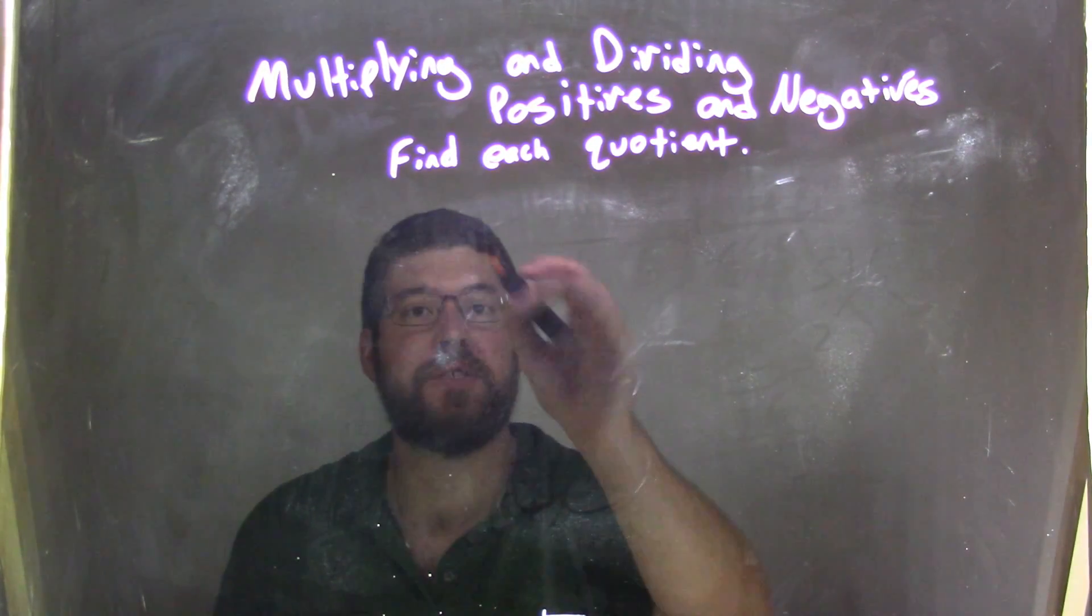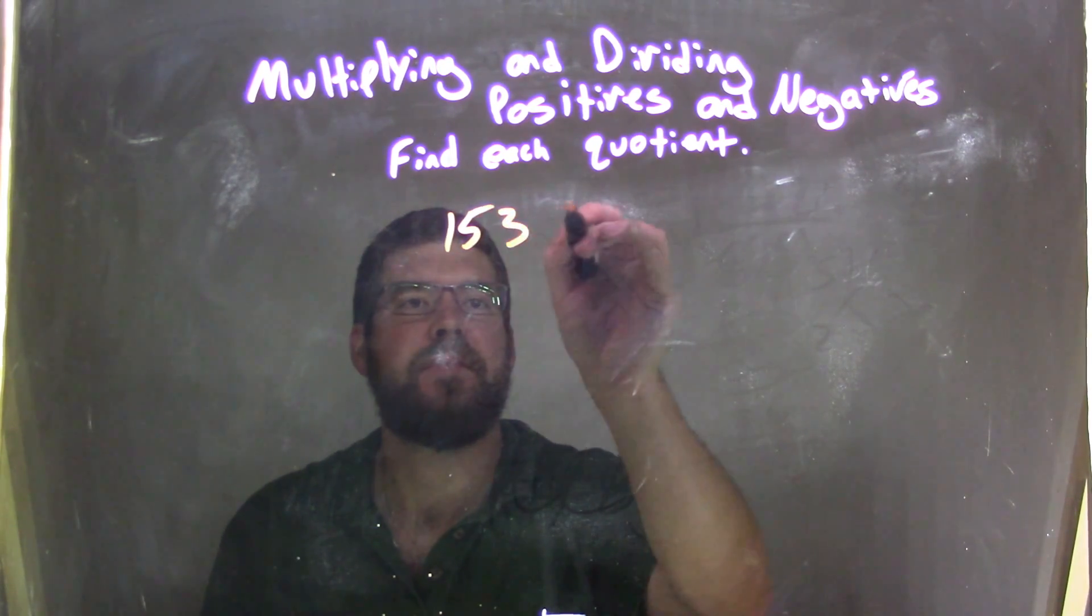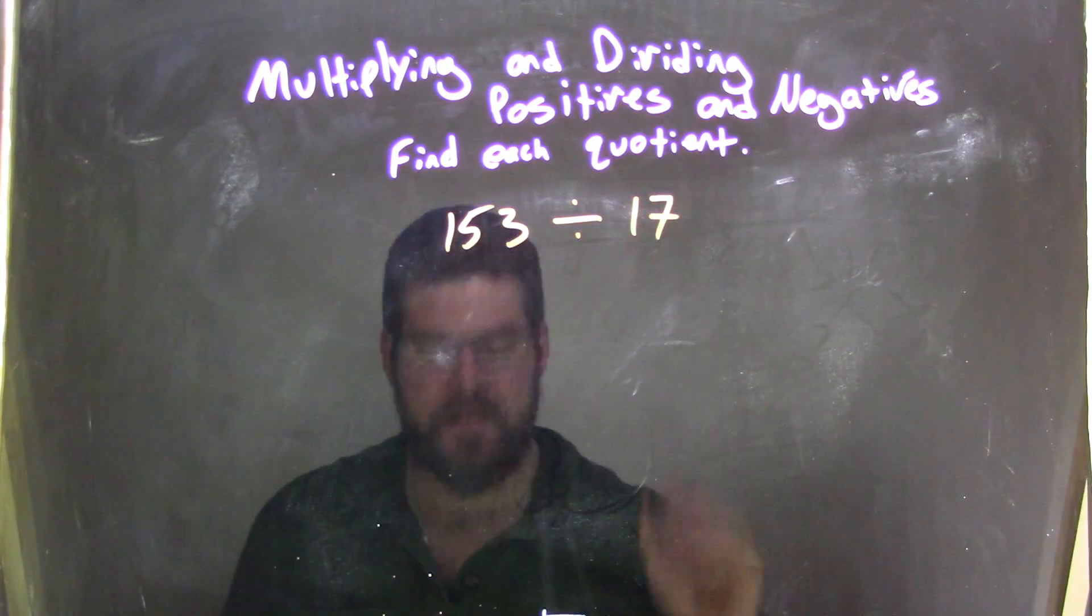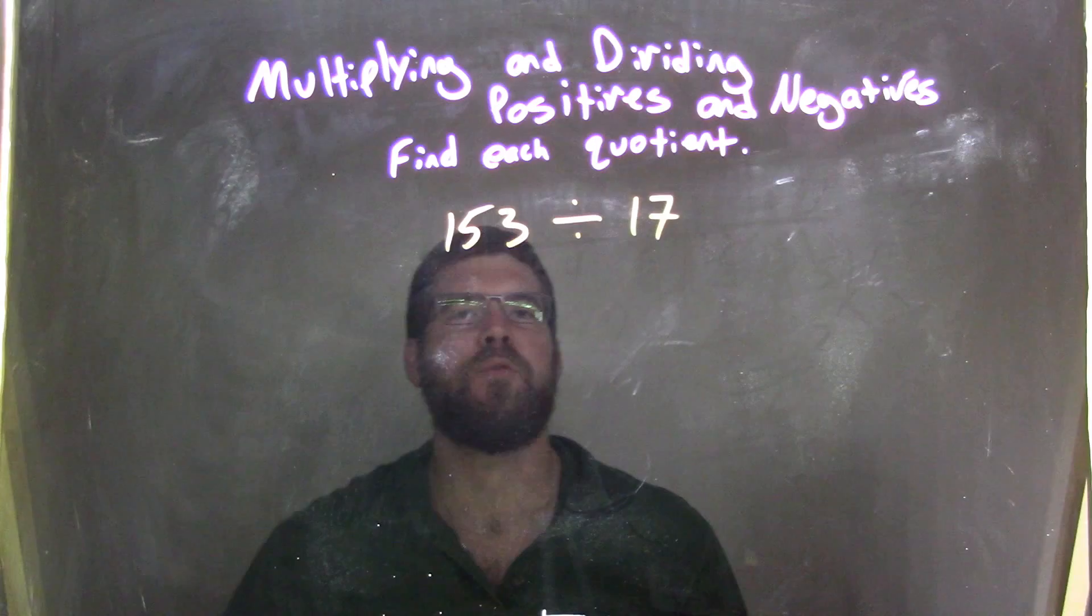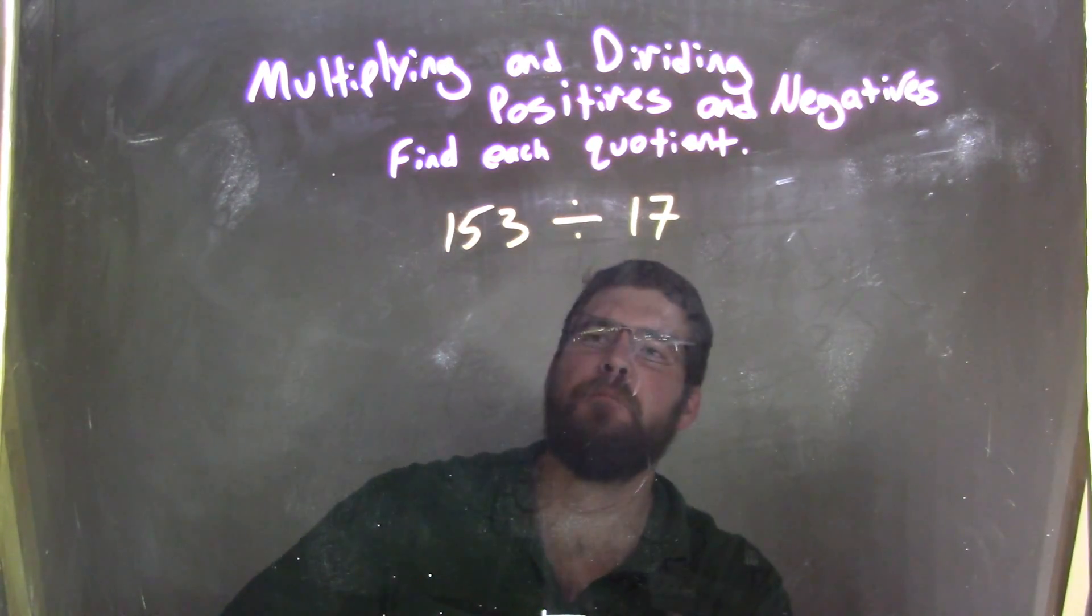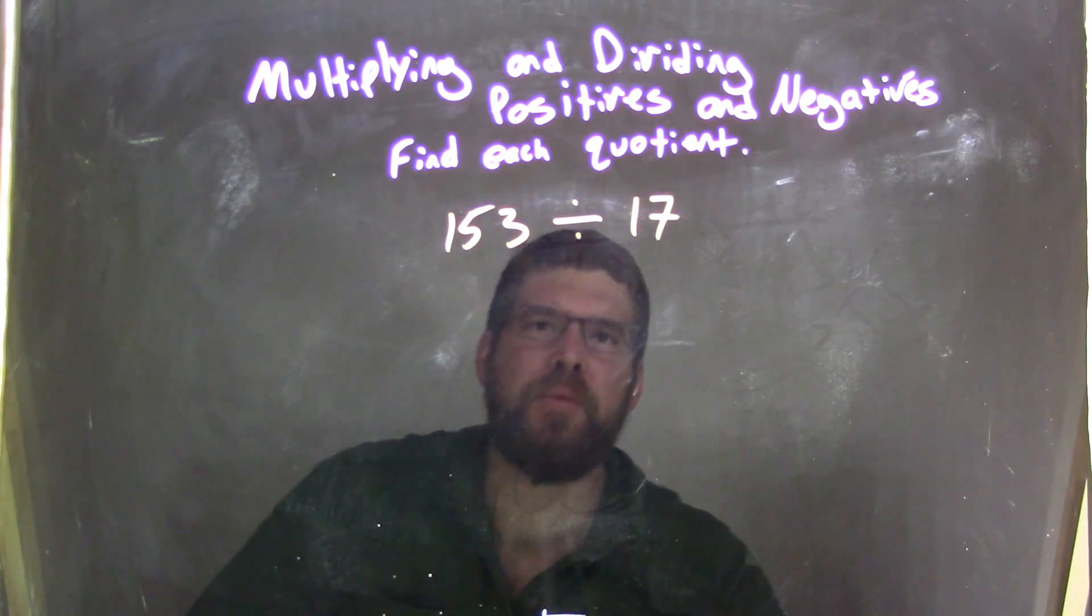So if I was given this quotient, 153 divided by 17, we're going a little differently here. How can we solve this? Well, 17 is a prime number, I can't break that down.